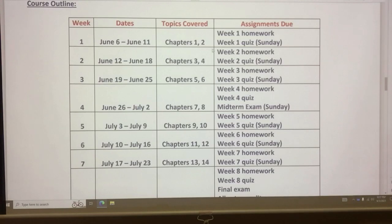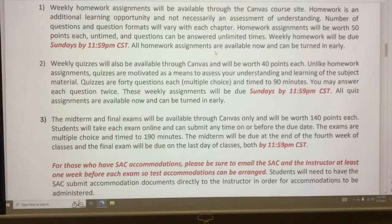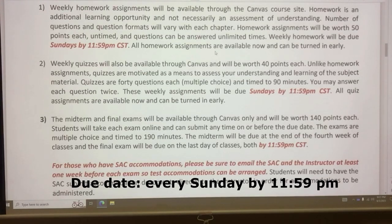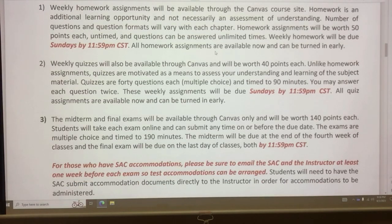You should complete homework and quizzes every week. Keep in mind that homework and quizzes have due dates, so if you miss the due date you will lose points with a penalty of one percent every day. Homework will be worth 50 points each, is untimed, and you can answer unlimited times. Quizzes are worth 40 points each, timed at 90 minutes, and you can answer each question twice. Due dates for homework and quizzes are every Sunday by 11:59 PM, and both can be turned in early.